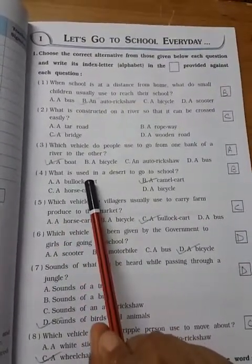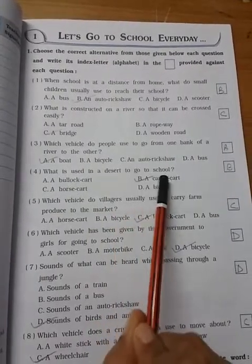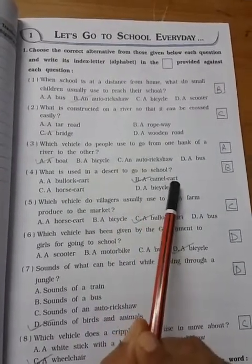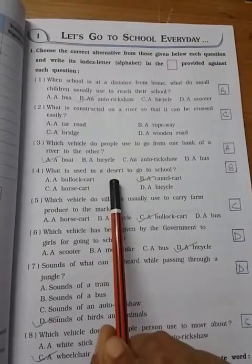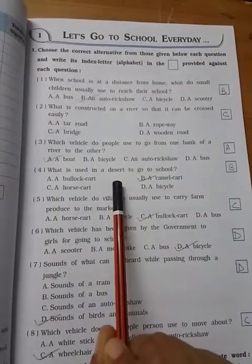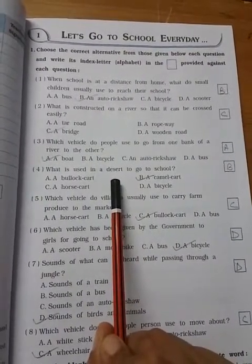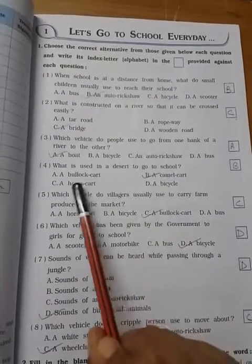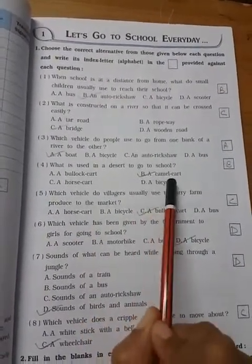What is used in the desert to go to school? Camel cart. You all know sheep is a desert animal and ship of the desert is camel. So the answer will be camel.